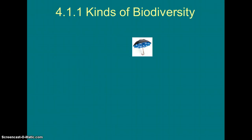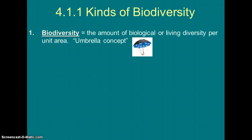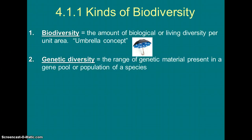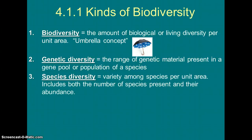Let's talk about the different types of biodiversity. Biodiversity in general is the amount of biological or living diversity per unit area — it's the umbrella concept. Genetic diversity is the range of genetic material present in the gene pool of a species' populations. Those genes can sometimes be used to make medicine, or they may help the organism survive. Species diversity is the variety in the amount and types of species per unit area — it's about richness and abundance, and we've even calculated it using Simpson's Diversity Index.